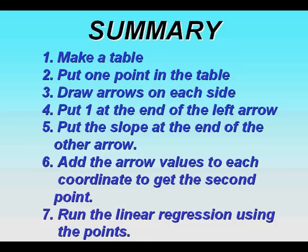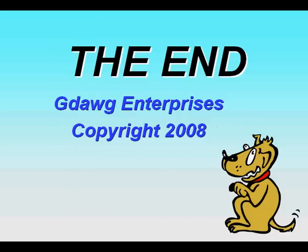Six, add the arrow values to each coordinate, x coordinate on the left, y coordinate on the right, to get that second point. And finally, run the linear regression using the points.